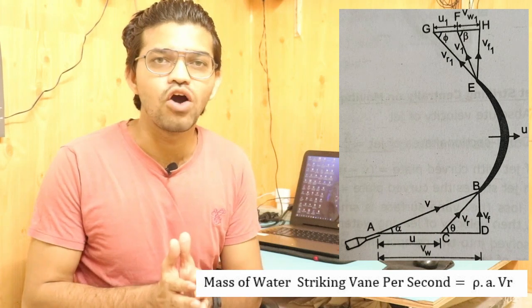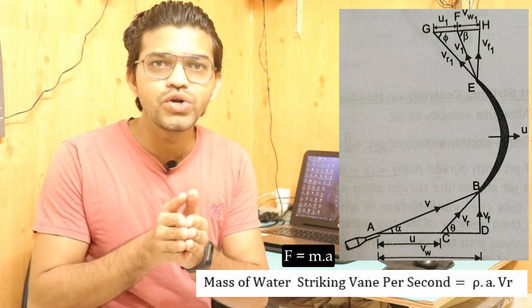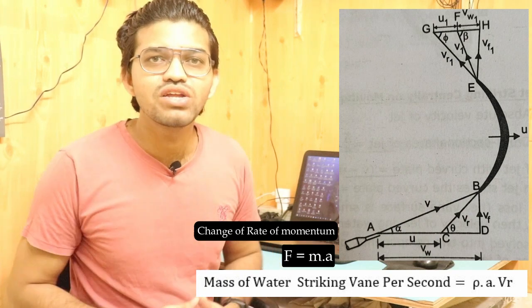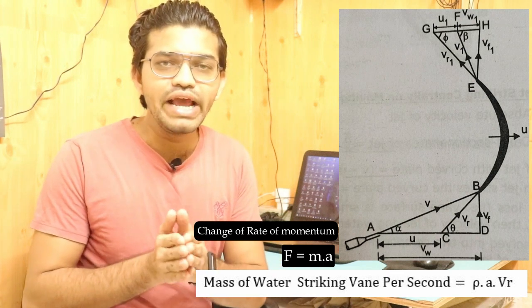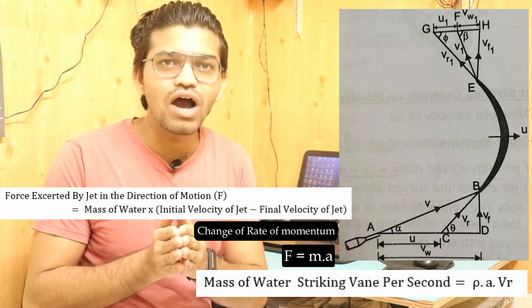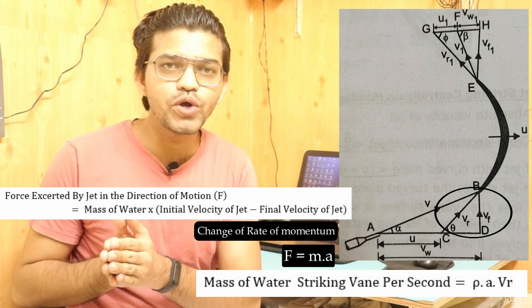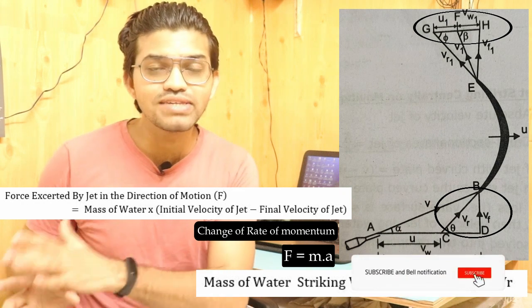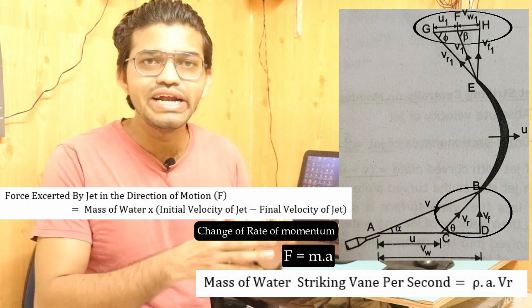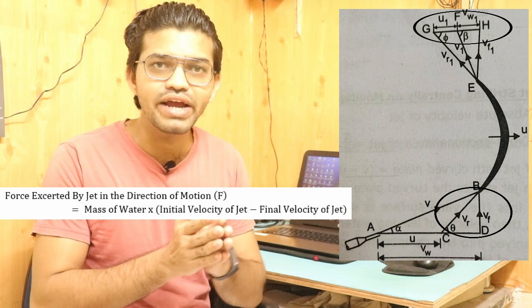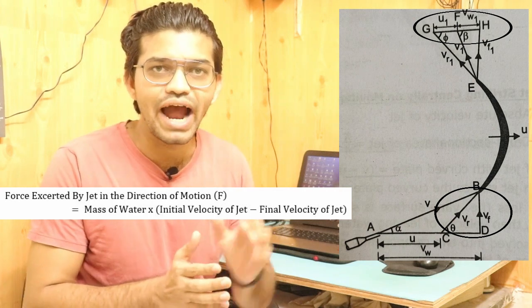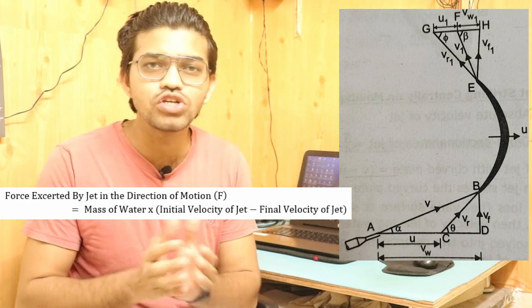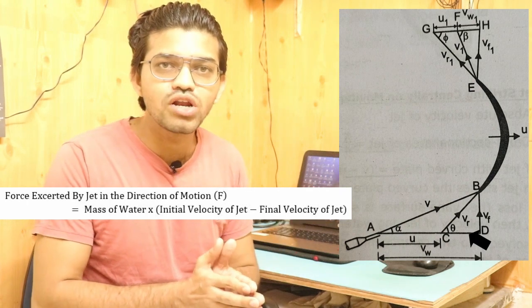Applying Newton's second law — force equals m times a, where a is the rate of change of velocity (i.e., rate of change of momentum) — we can calculate the force exerted by the water jet on the vane in the direction of motion. We need the inlet velocity minus the outlet velocity in that direction. From the velocity triangle, we find the horizontal component of vr: cd equals vr times cos(theta), which also equals vw minus u.